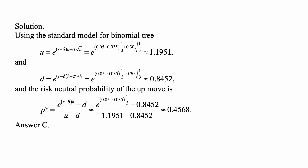And d, the value to which a dollar invested in the risky security goes on a down move, is e^((r − δ)h − σ√h) — that is, using a minus sign instead of plus for the up move. So that is e^((0.05 − 0.035)(1/3) − 0.30√(1/3)), which gives approximately d ≈ 0.8452.